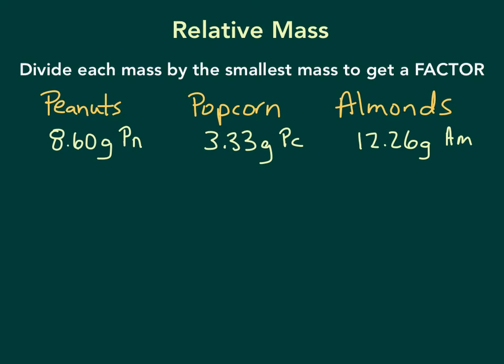In order to find the relative mass, we want to divide each mass by the smallest mass to get a factor. We want to know how these are related to each other. The smallest mass that I have here is the popcorn, and so I'm going to divide each of these by 3.33 grams.